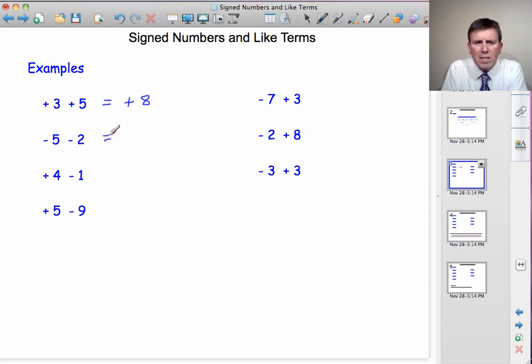Now then, minus 5, minus 2. They're all negatives. So we're adding them together to get more negatives. How many? 7 negatives.